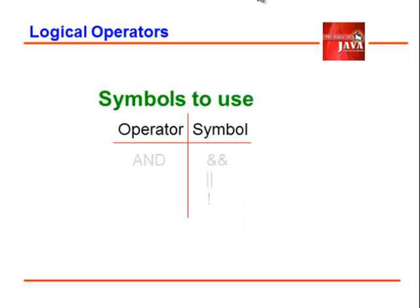What are the symbols to use? For logical AND, we use double ampersand. And for logical OR, we use double pipe symbol. And for NOT operator, we simply use the exclamation point.